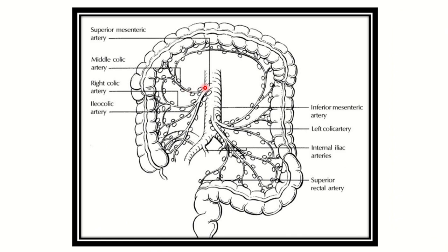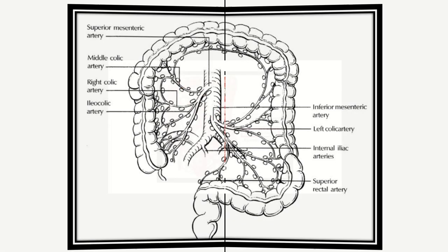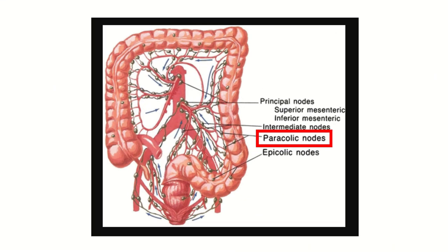Here we can see the lymphatic drainage. This is the abdominal aorta, and we can see the lymphatic drainage finally drains into lymph nodes located around the aorta, which are called the para-aortic lymph nodes. This picture clearly shows that the lymphatic drainage finally occurs through different lymph nodes and lymphatic channels around the abdominal aorta.